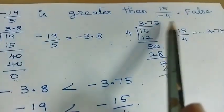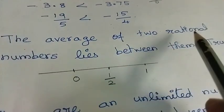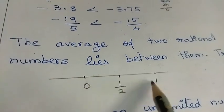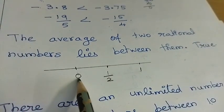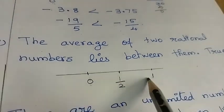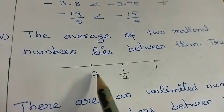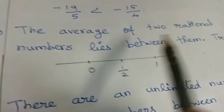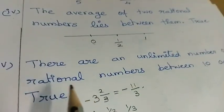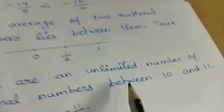Fourth one: The average of two rational numbers lies between them. For example, 0 and 1: average is 0 plus 1 by 2 = 1 by 2, which lies between 0 and 1. So this is True. Fifth one: There are an unlimited number of rational numbers between 10 and 11. This is also True.